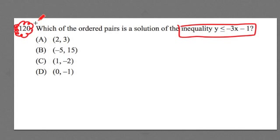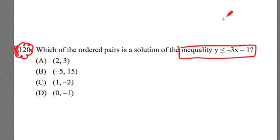Let's take a look at it. Number 120: which of the following ordered pairs is the solution of the inequality y is less than or equal to negative 3x minus 1? Now there's a couple parts to this. Maybe we should just really quickly address the inequality part.